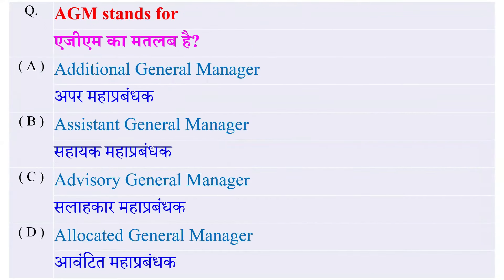AGM stands for — AGM का full form क्या होता है? Options: Additional General Manager, Assistant General Manager, Advisory General Manager, या Allocated General Manager — and the right option is Additional General Manager।